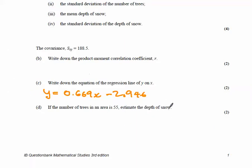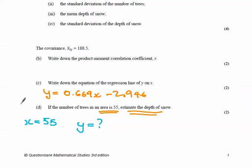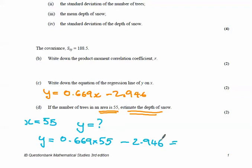We can use this to estimate values — make predictions. The next part tells us: if the number of trees in the area is 55, estimate the depth of snow. Our variable x is the number of trees, so if x = 55, what would y be? We substitute: y = 0.669 × 55 − 2.946. Working that out on the calculator gives 33.8 centimetres. So that would be an estimate for the depth of snow.